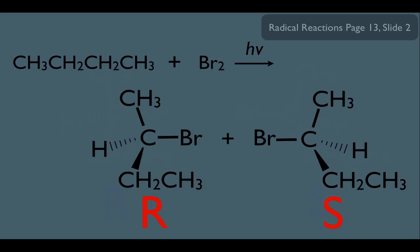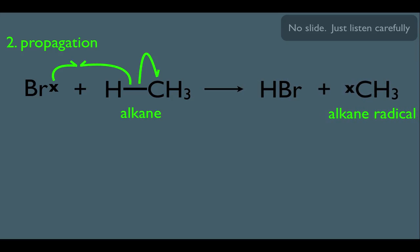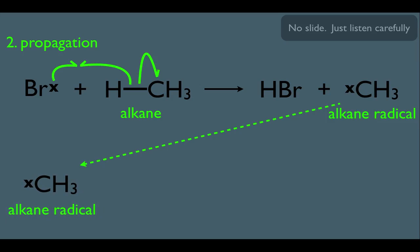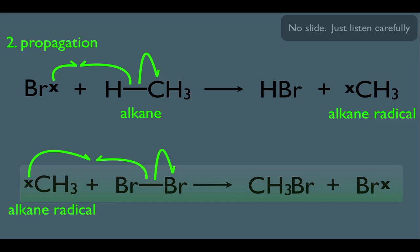Going back to our reaction, the product is both R and S — a racemic mixture — because each one forms equally likely. To understand why, let's go back to the mechanism and focus on the propagation step. When the alkane reacts with the Br radical, we get HBr and an alkane radical. Then, in the second propagation step, the alkane radical reacts with Br2 that hasn't been split. That's the step we want to focus on.